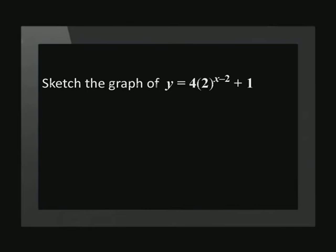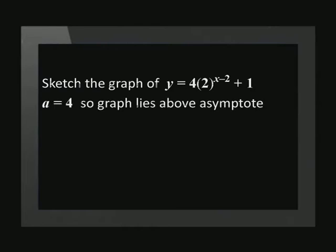Let's apply these six steps to an example. Sketch the graph of y equals 4 times 2 to the power of x minus 2 plus 1. The x is in the exponent, and this means that the graph is exponential. The first step is to determine whether the graph lies above or below the asymptote. Since the value of a is 4, we can establish that the graph lies above the asymptote.